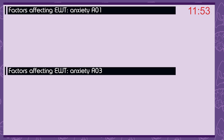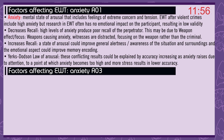Factors affecting the accuracy of eyewitness testimony: anxiety. Anxiety is a mental state of arousal that includes feelings of extreme concern and tension. Eyewitness testimony after violent crimes involves high anxiety, but research in eyewitness testimony often has no emotional impact on the participant, resulting in low validity. Anxiety decreases recall: high levels of anxiety produce poor recall of the perpetrator. This may be due to weapon focus — weapons causing anxiety, with witnesses distracted and focusing on the weapon rather than the criminal. Anxiety may increase recall: a state of arousal could improve general alertness or awareness and the emotional aspect could improve memory encoding. The Yerkes-Dodson law of arousal may explain conflicting results: accuracy increases as anxiety rises due to attention, to a point at which anxiety becomes too high and more stress results in lower accuracy.